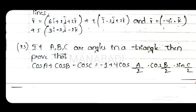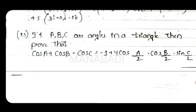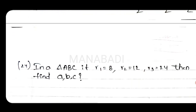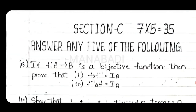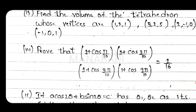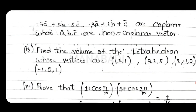If A, B, C are the angles in a triangle, then prove that cos A plus cos B minus cos C equals minus 1 plus 4 cos A by 2 cos B by 2 sin C by 2 in the 23rd question. In the 24th question, in a triangle ABC, if R1 equals 8, R2 equals 12, R3 equals 24, then find A, B, C values. So this is my paper. If you like, subscribe to see the next video. Click on the link to my channel. Bye.